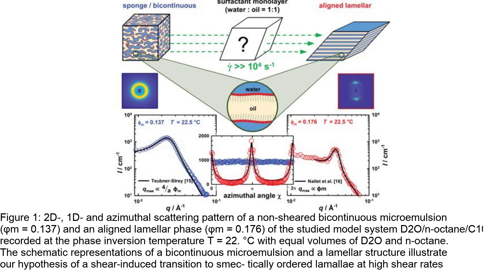The 2D, 1D, and azimuthal scattering patterns of a non-sheared bicontinuous microemulsion and an aligned lamellar phase are shown, recorded at the phase inversion temperature with equal volumes of D2O and N-octane. The figure also includes schematic representations of a bicontinuous microemulsion and a lamellar structure, illustrating the hypothesis of a shear-induced transition at high shear rates. The scattering patterns reveal a gradual increase in scattering anisotropy with increasing flow rate, accompanied by a decrease in the size of microemulsion domains along the main flow orientation.